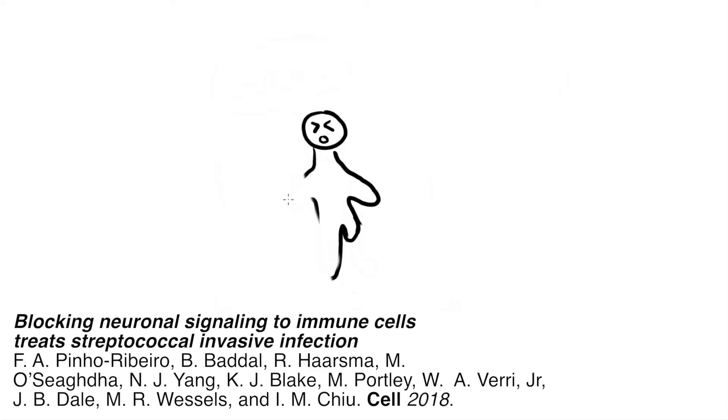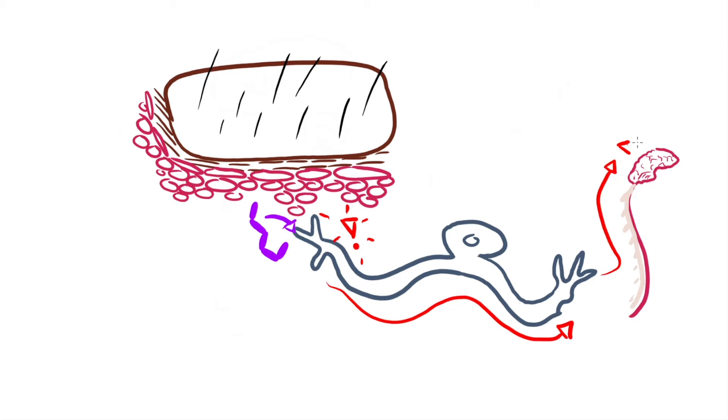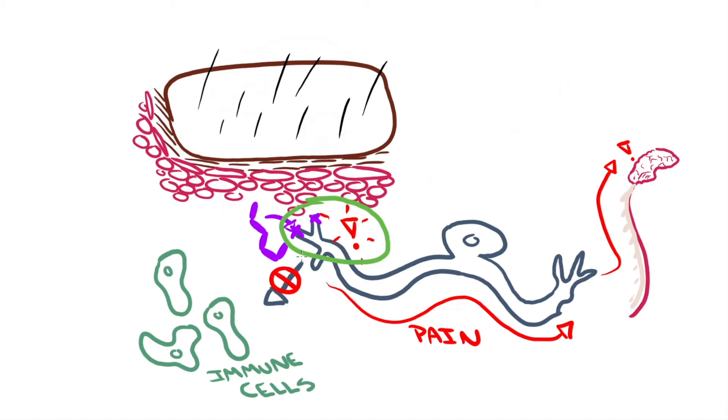Researchers at Harvard Medical School thought the pain was a clue into how the disease works, and they were right. They learned that the strep pyogenes bacteria are activating special pain-sensing neurons on purpose. The bacteria activate these neurons by injuring them, causing the neurons to release a signal that keeps the immune system away. Basically, by injuring the neurons, the bacteria are helping themselves avoid the immune system and stay alive.